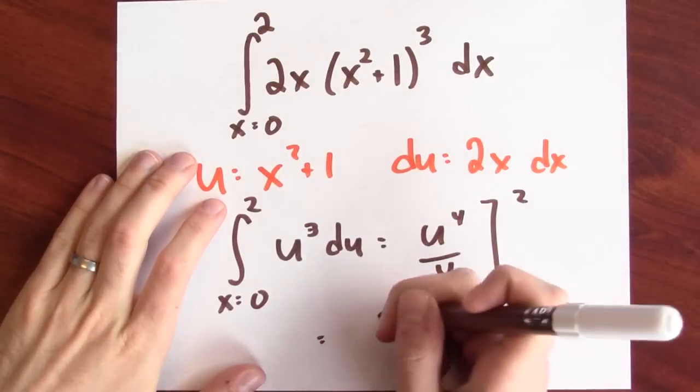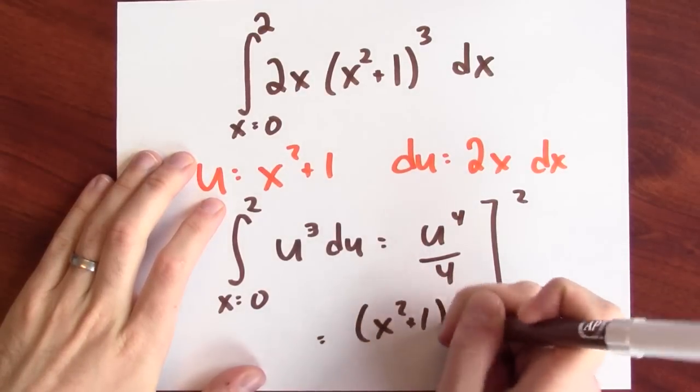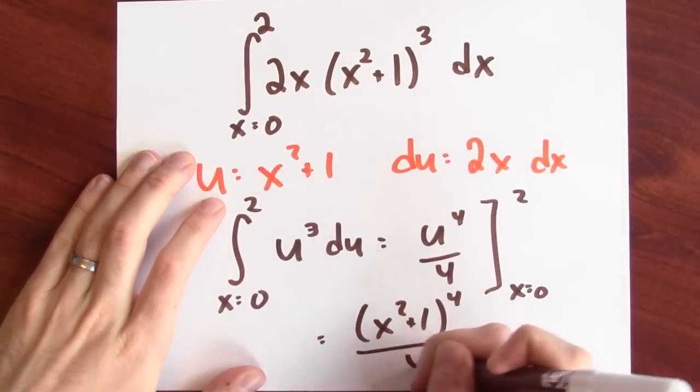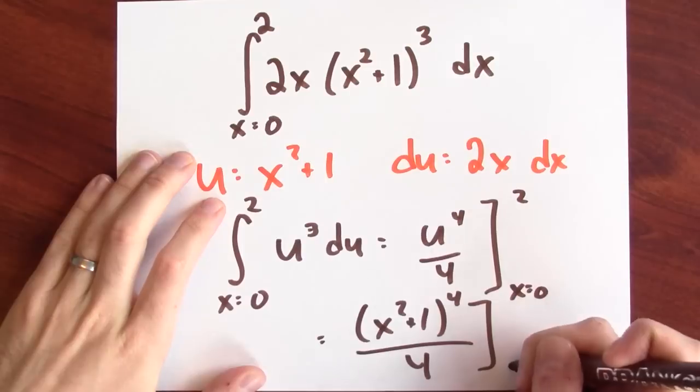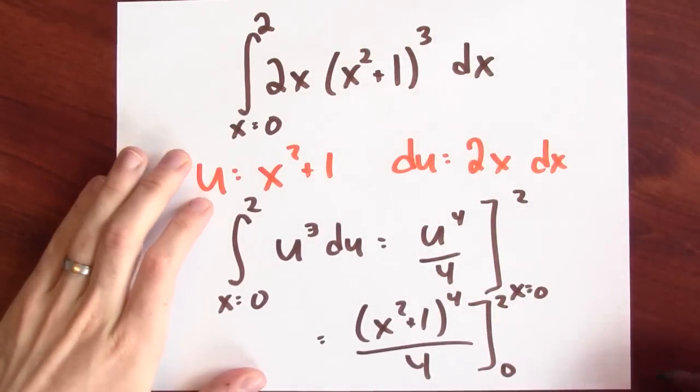Now we replace u by x squared plus 1. So this is (x squared plus 1) to the fourth over 4. And I want to evaluate at 0 and 2. Now we plug in x equals 2 and x equals 0 and take the difference.